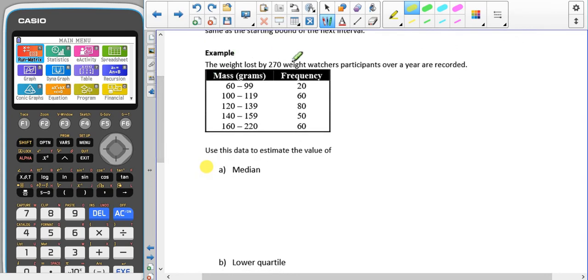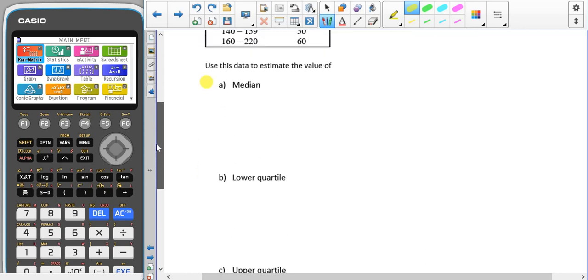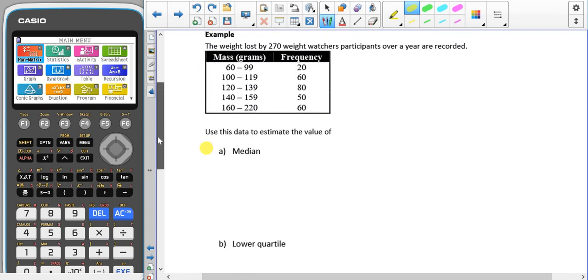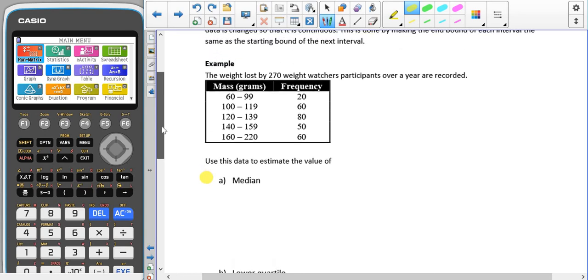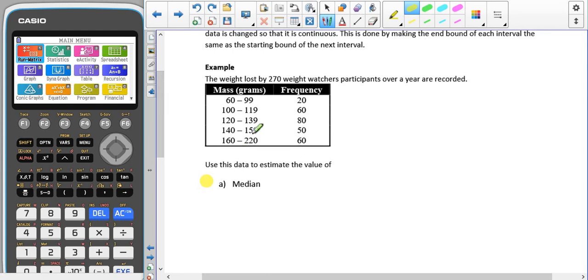We have already discussed how to use interpolation to find key points with continuous data. The same can be done with discrete data. This does require an extra step, however, to make sure that the data is changed to be a continuous set of data before we start. This is done by making the end of the boundaries equal to the same as the starting point of the next interval.